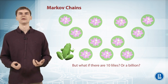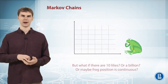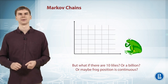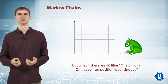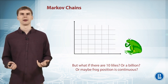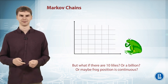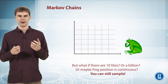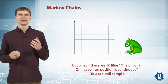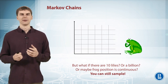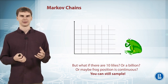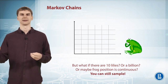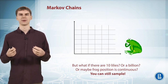Or maybe your frog can be continuous and jump from any point on a 2D plane to any other point. In that case you can generate samples from a continuous distribution by simulating your dynamic system — writing down the path on the 2D plane and recording the last position.